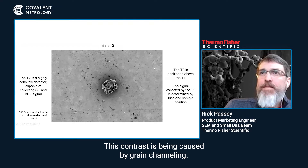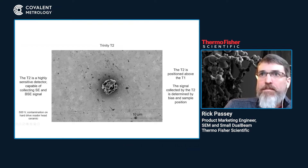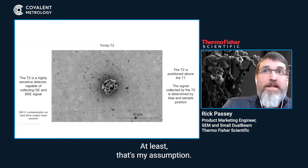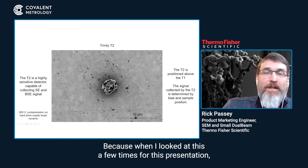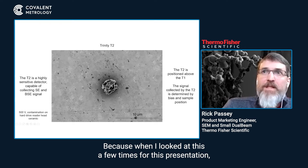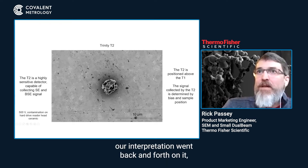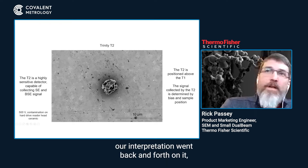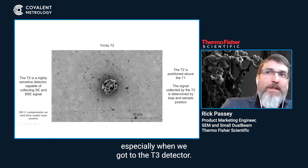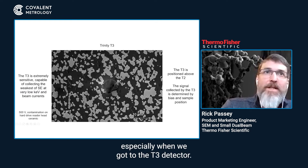This contrast is being caused by grain channeling — at least that's my assumption — because when I looked at this a few times for this presentation, the interpretation kind of went back and forth, especially when we got to the T3 detector.